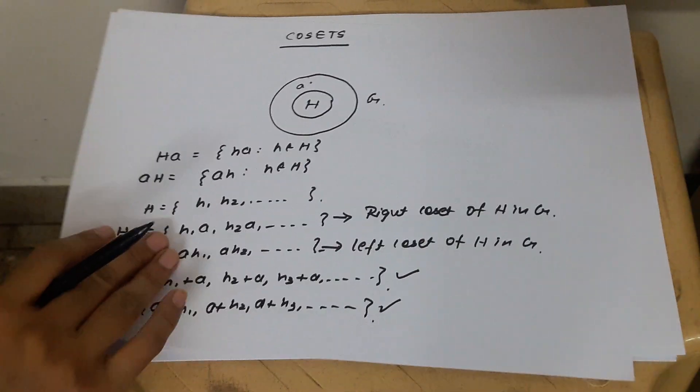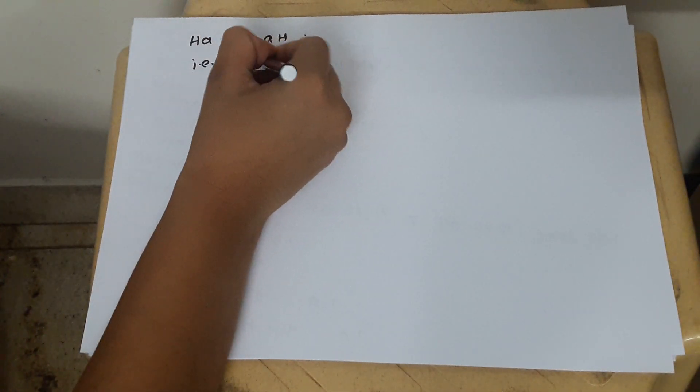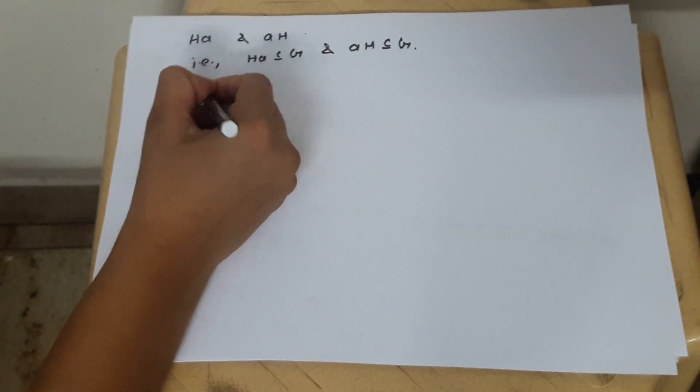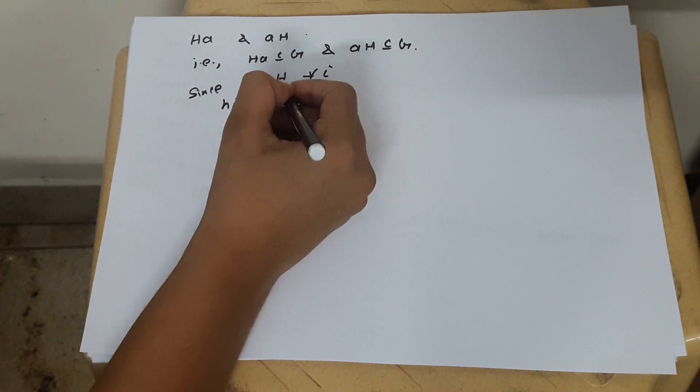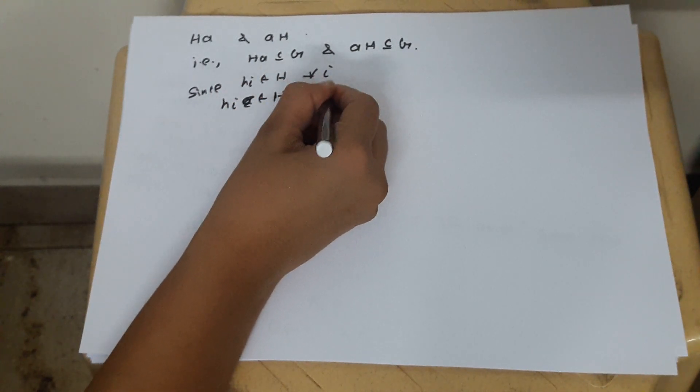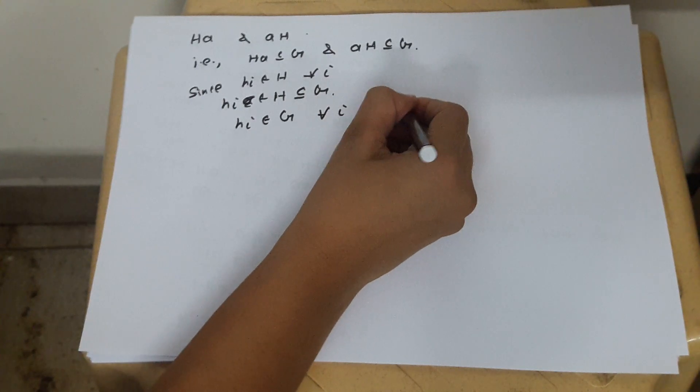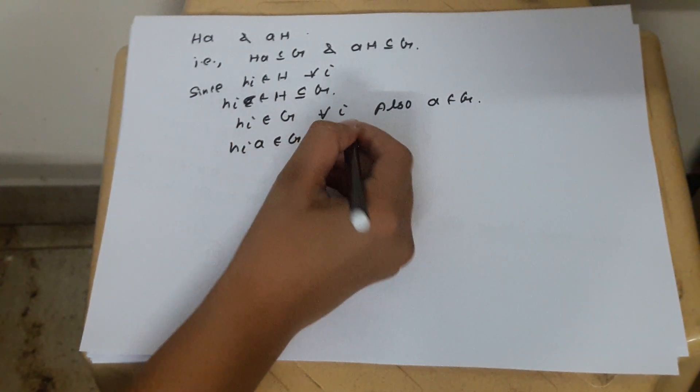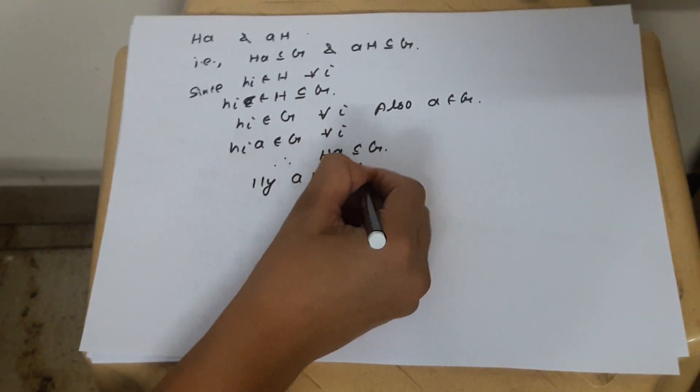Now, you can clearly see that both your right coset and left coset are subsets of G. That is, HA contained and equal to G and AH contained and equal to G. You can easily see that since HI belongs to H for all I, therefore HI belongs to H contained and equal to G. Because H is a subset of G, therefore HI belongs to G for all I. Therefore, HA contained and equal to G. Similarly, AH is also a subset of G.